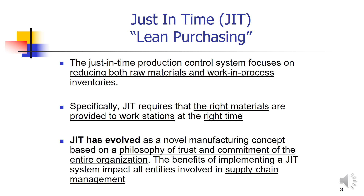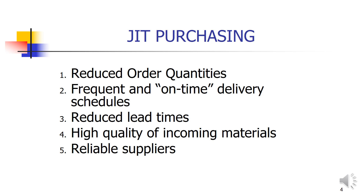It is a philosophy of trust and commitment of the entire organization. In order to apply a Just In Time system, you must have this philosophy, which is built on trust and strong commitment between the supplier and the manufacturer — and not only for one department, but for the entire organization. The major benefit of implementing the Just In Time system impacts every entity involved in supply chain management. The major characteristics of Just In Time purchasing include: reduced order quantity — as mentioned, the smaller the order quantity the better — and frequent and on-time delivery schedule.